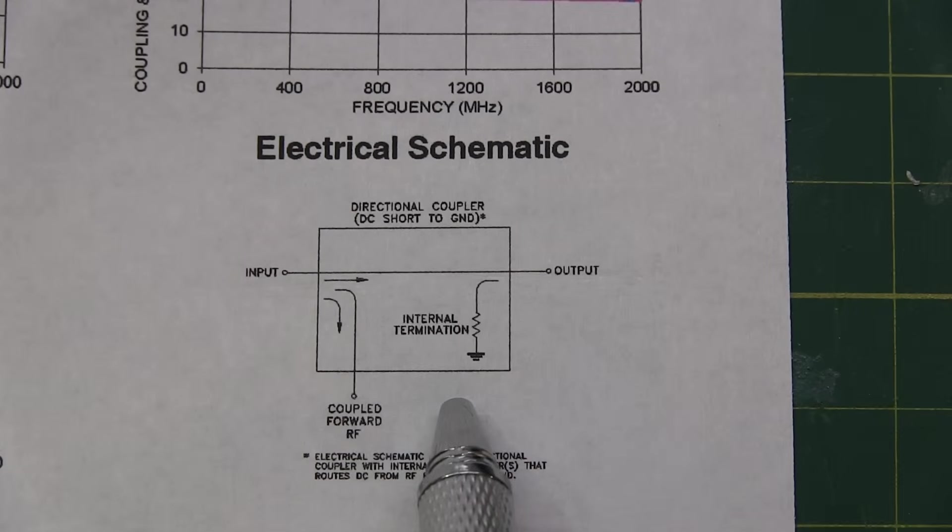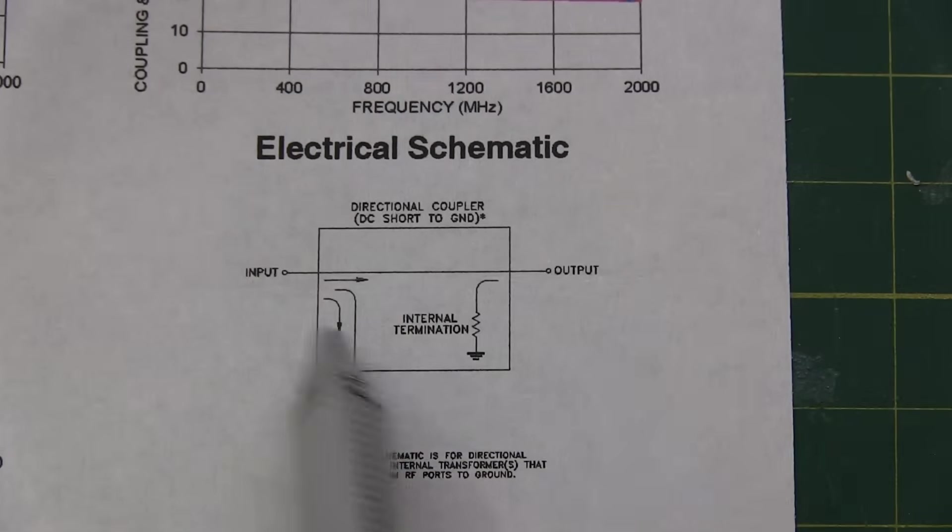Now another important parameter of a directional coupler is called the directivity. The directivity is the ratio of the forward coupled response to the reverse coupled response. Now ideally, as we said, this forward coupled loss here should be about 20 dB or about 20 dB down. And ideally the reverse would not get any signal coupled here. But the reality is some signal will get coupled in the reverse direction. The difference between the forward coupled power and the reverse coupled power is called the directivity. And of course, the final measurements we could make are the return loss of each of the three ports with the other two terminated.